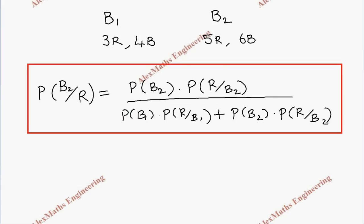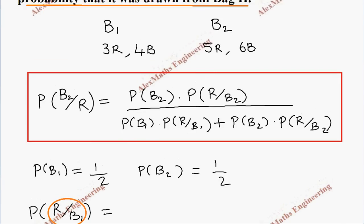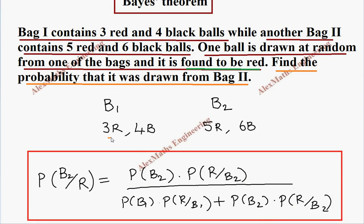Coming to the values: there are two bags, so P(B1) is one by two and P(B2) is also one by two. For P(R | B1) — the probability of getting red from bag one — bag one has three red and four black, so total seven balls, and red is three.